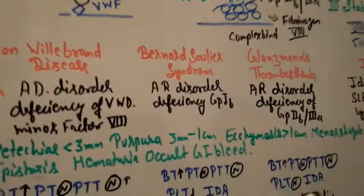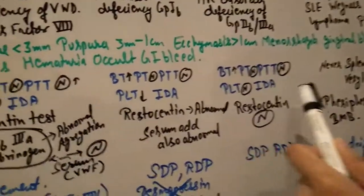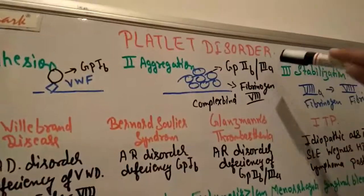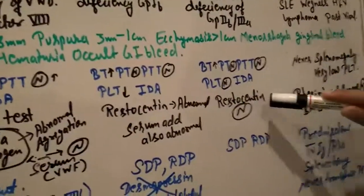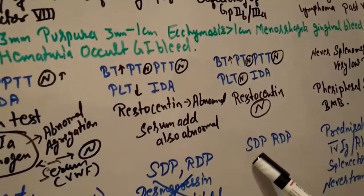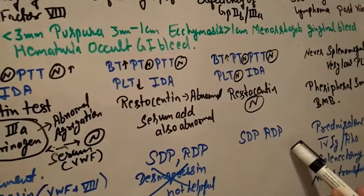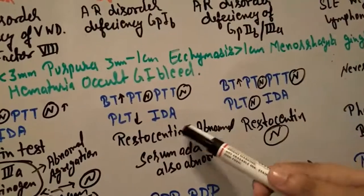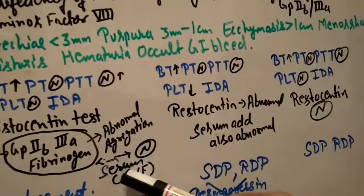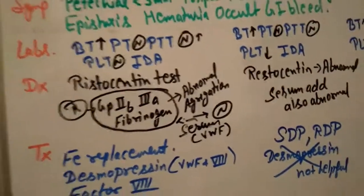PT and PTT are normal with no factor deficiency. Platelet is normal, but sometimes it shows iron deficiency anemia. If we do the ristocetin test and there is deficiency, we add ristocetin and it's normal—no pathology shown. For treatment, we can do SDP and RDP transfusion: single donor platelet or random donor platelet. The ristocetin test here is normal, which differentiates it from Bernard-Soulier where ristocetin is abnormal even with serum.